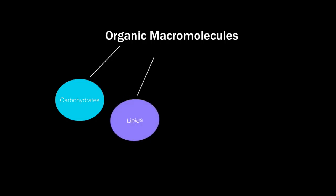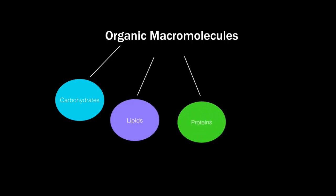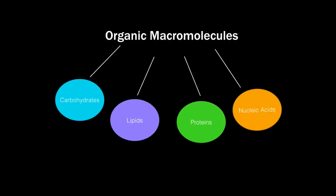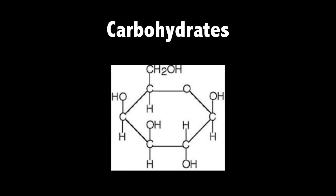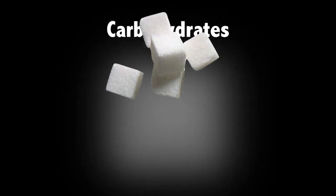These organic macromolecules are the chemicals of life, compounds composed of more than one type of element containing carbon that are typically found in living things. There are four groups of organic macromolecules: carbohydrates, lipids, proteins, and nucleic acids.